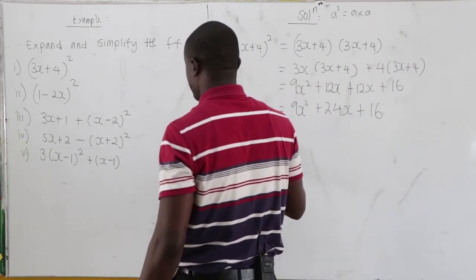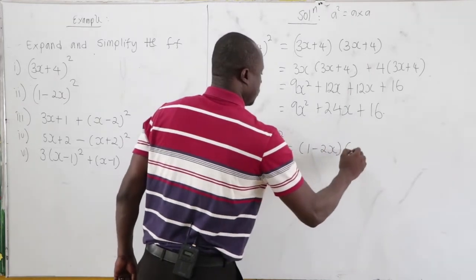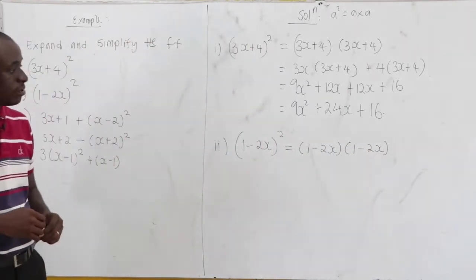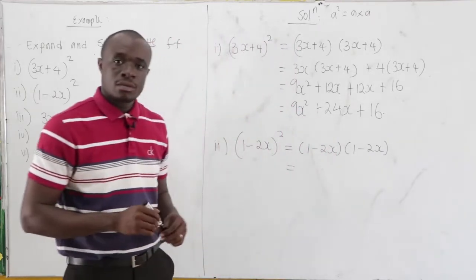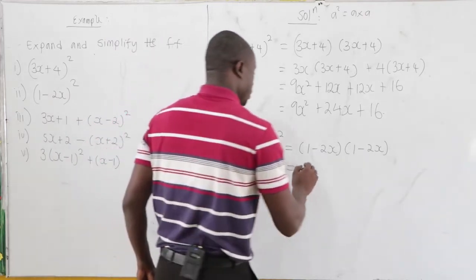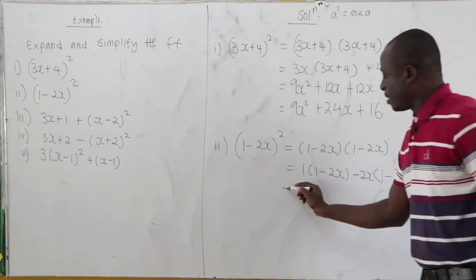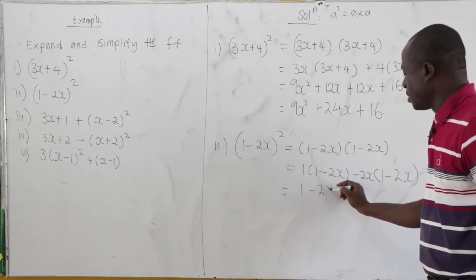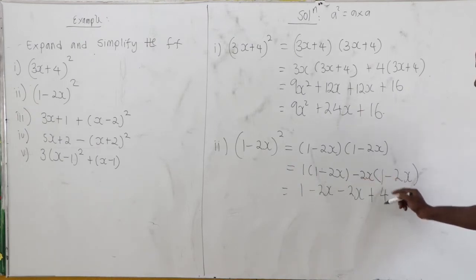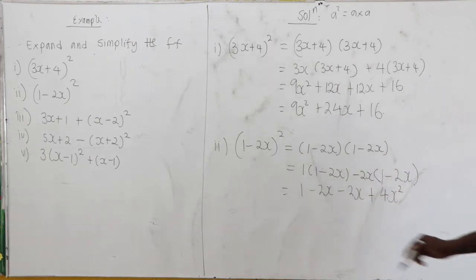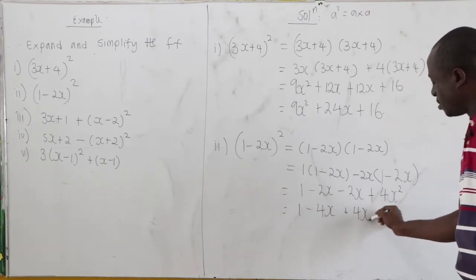Second: 1 minus 2x all squared equals 1 minus 2x times 1 minus 2x. Pick 1: 1 times 1 equals 1, 1 times negative 2x equals negative 2x. Pick negative 2x: negative 2x times 1 equals negative 2x, negative 2x times negative 2x equals positive 4x squared. Grouping: 1, negative 2x minus 2x equals negative 4x, plus 4x squared.